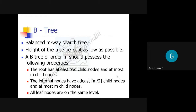Another important property: all leaf nodes are on the same level. That is what a B-tree is — a balanced M-way search tree whose height should be maintained as low as possible. These properties are the major ones to consider while performing operations like insertion, deletion, and searching.